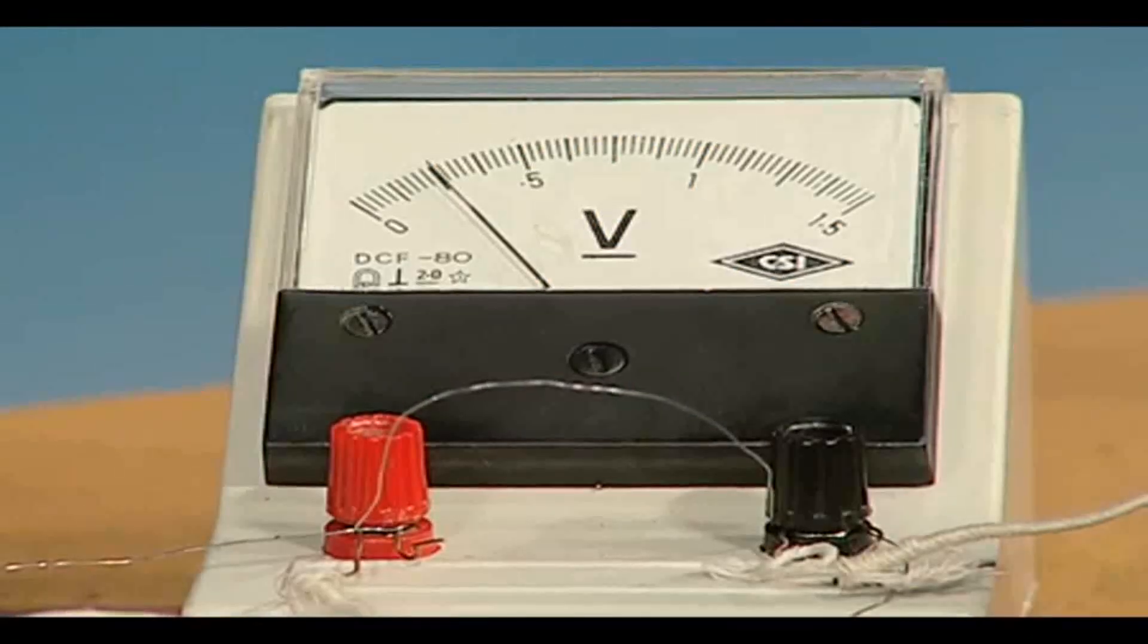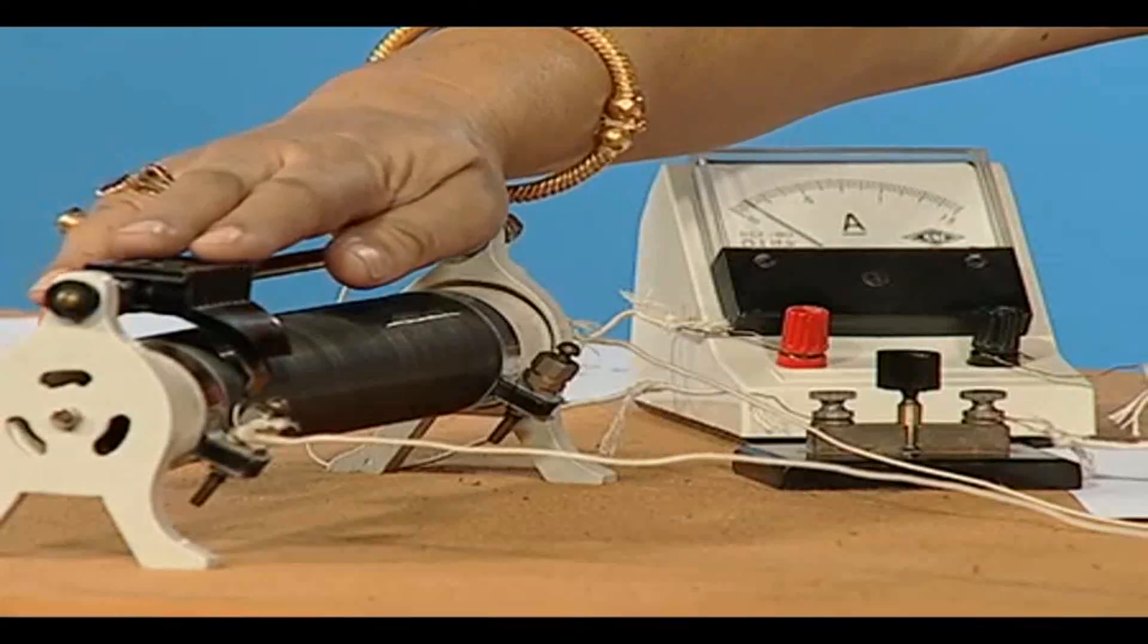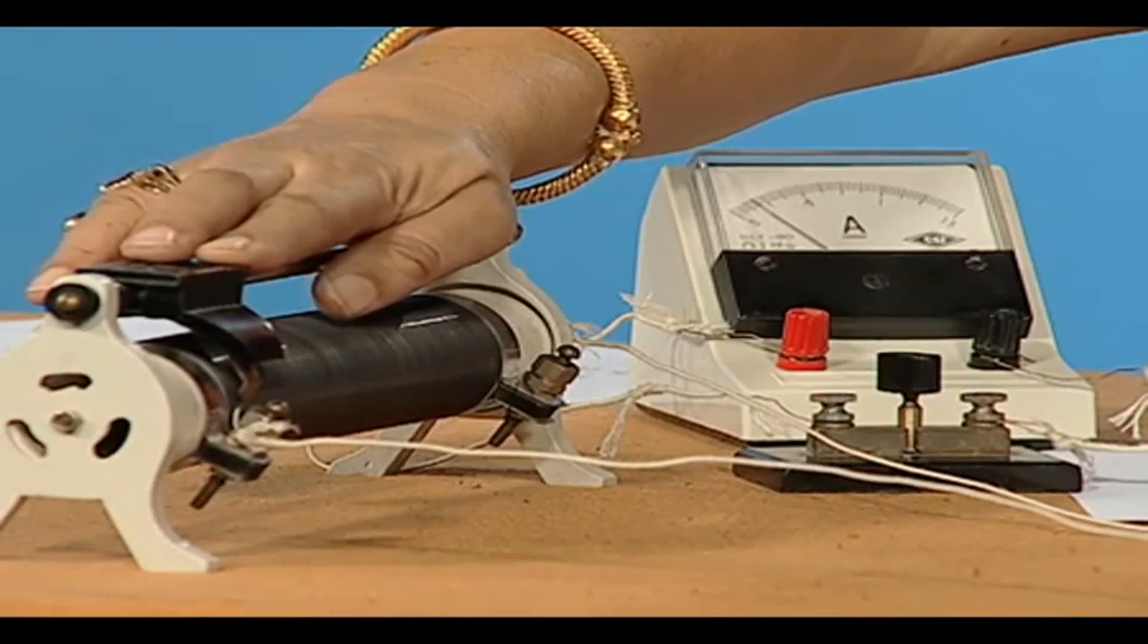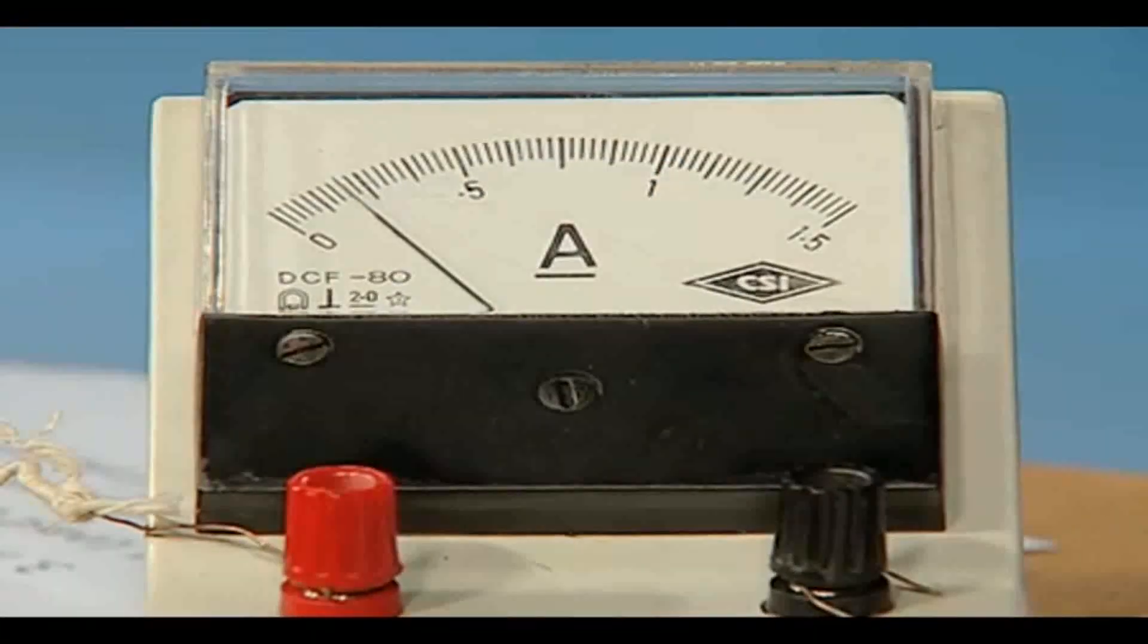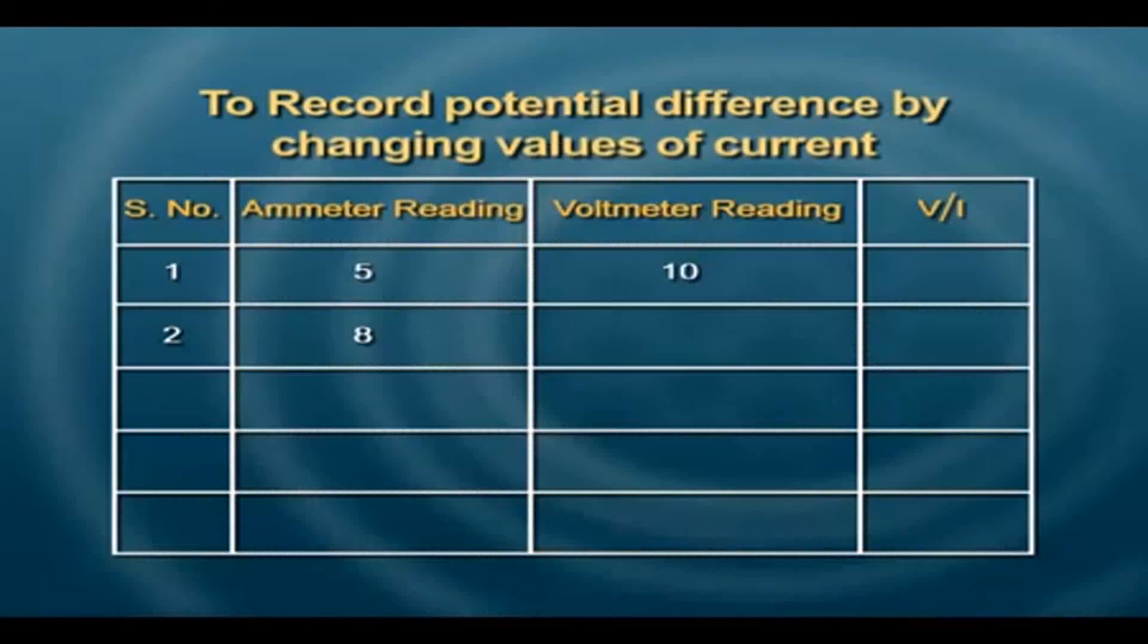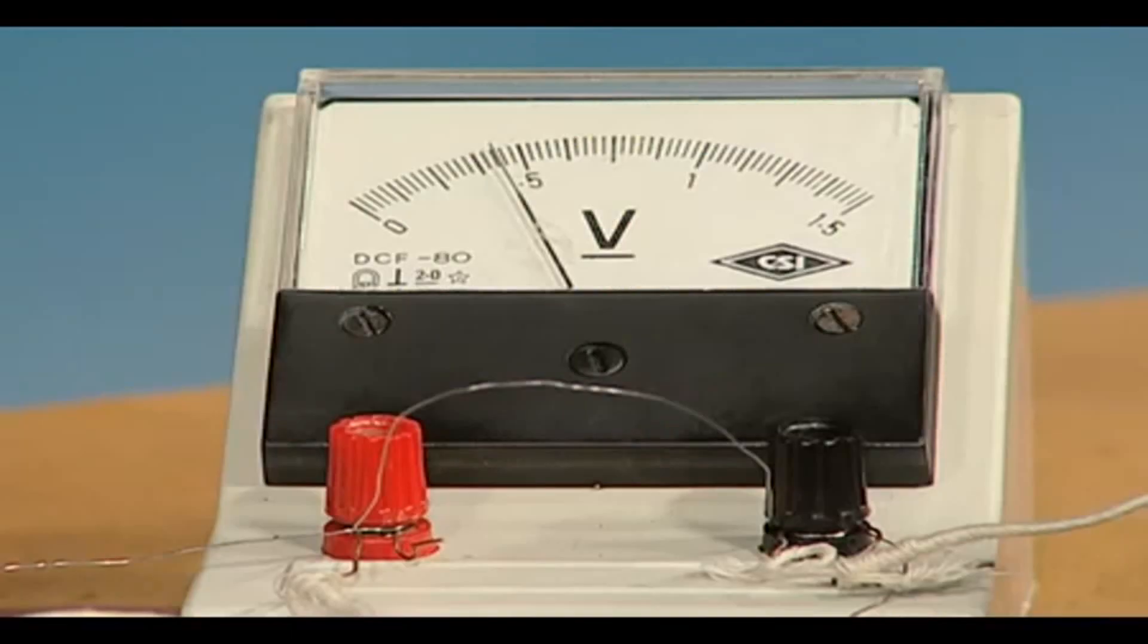We change the value of current in the circuit using the rheostat and observe that the ammeter reading is 8 divisions and the voltmeter reading is 18.